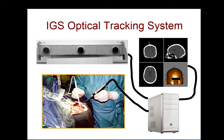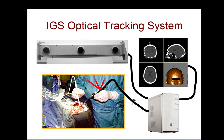Here we see a surgeon with a probe pointing at part of the anatomy in the bottom left, and the computer sends a signal to the probe, which then sends optical signals throughout the operating room where they are received by a tracking system. These are infrared signals, so you can't see them with your eye, but the camera can see them.